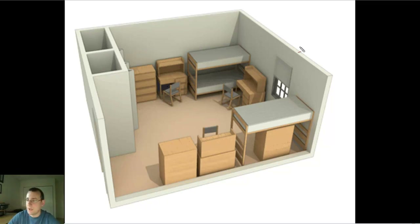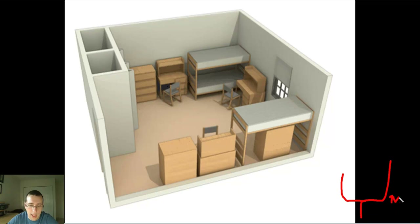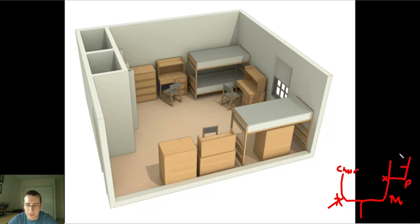Let's create a taxonomy tree for this. Either touching the wall or not touching the wall. The not-touching branch gives you the chair. On the touching branch, either it's part of the wall or not part of the wall. If it's part of the wall, two options: it opens vertically — that's the window — or it opens horizontally — that's the closet door. On the not-part-of-the-wall branch, you have all the furniture in the room.